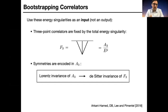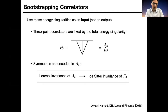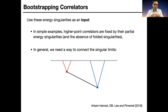Rather than viewing these singularities as outputs of complicated calculations, we use them as inputs and try to bootstrap the rest of the correlator. Starting with three-point interactions — which have no exchanges — the only singularity is the total energy singularity. The three-point correlator is completely fixed in terms of the corresponding three-point amplitude: roughly, you take the amplitude, divide by the appropriate power of the total energy, and get the three-point correlator. The three-point amplitude encodes the symmetries: if it's Lorentz-invariant, the full correlator is de Sitter invariant; a non-Lorentz-invariant amplitude breaks the symmetry of the correlator.